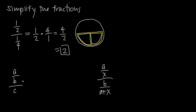One thing to note before we do the math is that we have to indicate that the denominators cannot be equal to 0, and we have to look at all three denominators. Note that c in the denominator is the same as c over 1. So looking at our denominators: b cannot equal 0, because the denominator of a fraction can never be 0. The denominator of 1 is always nonzero, so we don't need to write that. But we also need to say that the larger denominator c cannot be equal to 0.